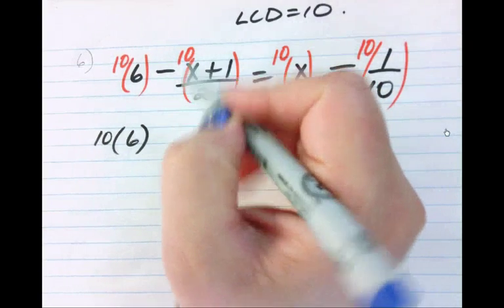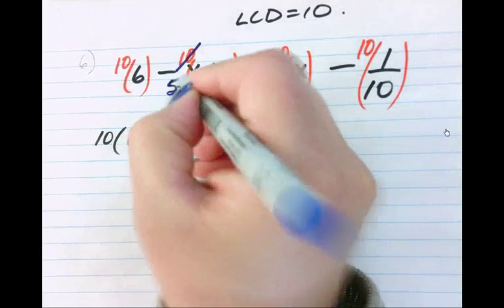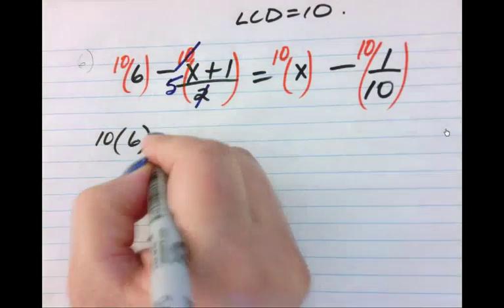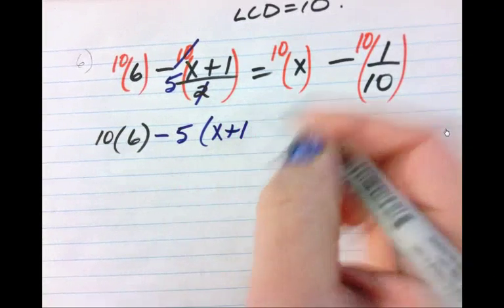So here there's a fraction, right? 10/2, how do I reduce that? What am I left with? Take a 2 out of the 10 and I'm left with a 5. So that gets written as minus 5, and then I'm going to leave the (x+1) as is in the bracket. I'll expand it through later.